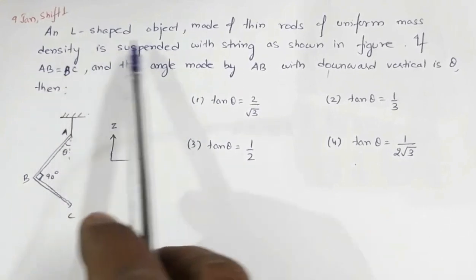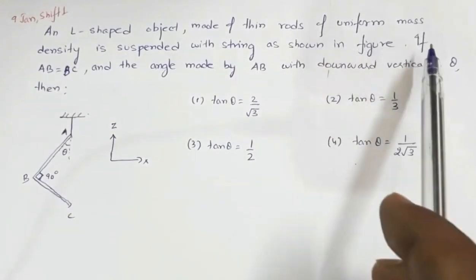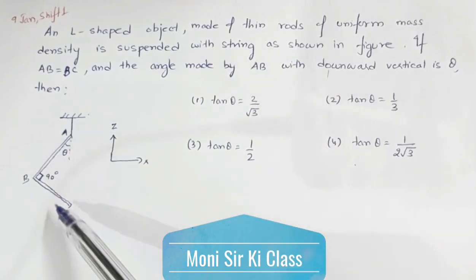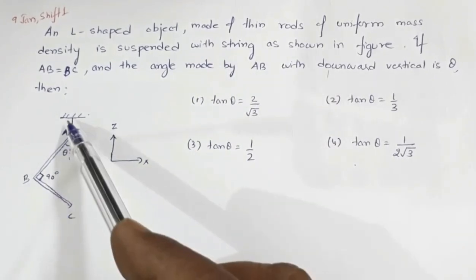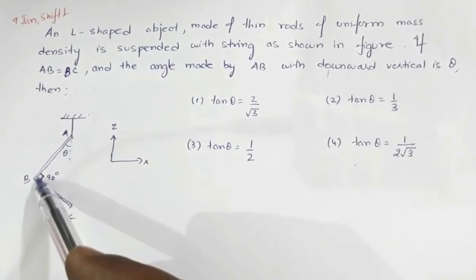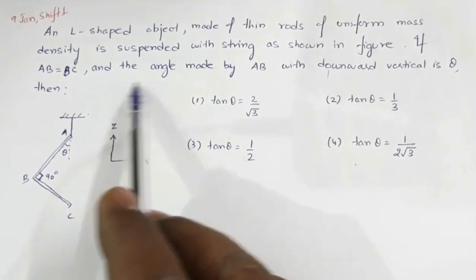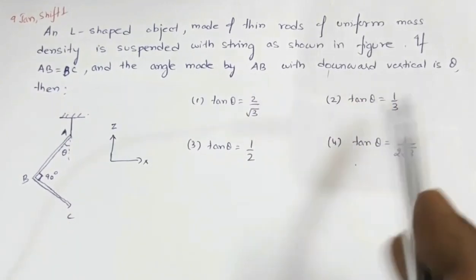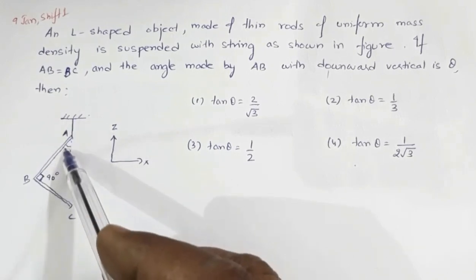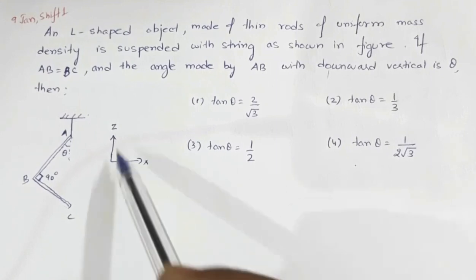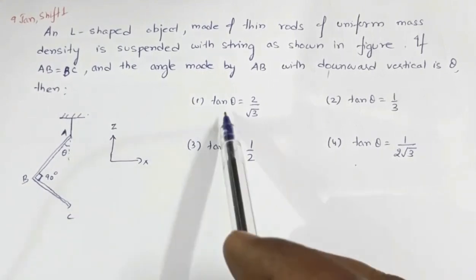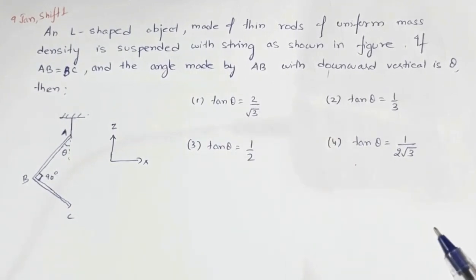In this question, we have an L-shaped object made of thin rods of uniform mass density, suspended with a string as shown. These are the two rods of uniform mass density and it is suspended from point A. The length AB and BC are equal, and the angle made by AB with the downward vertical is theta. This system is obviously at equilibrium and we are asked to find the value of tan theta.